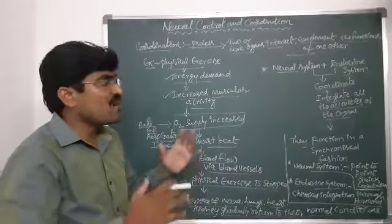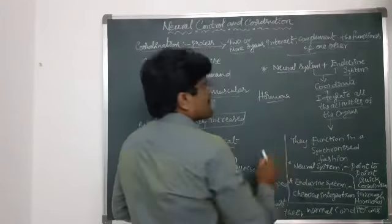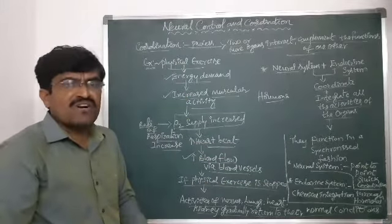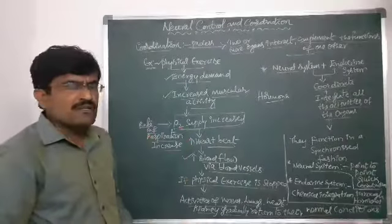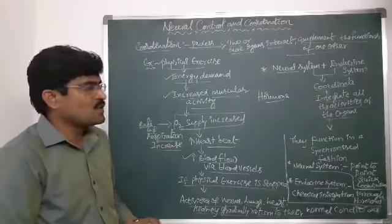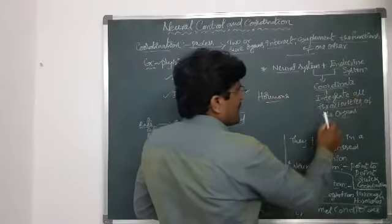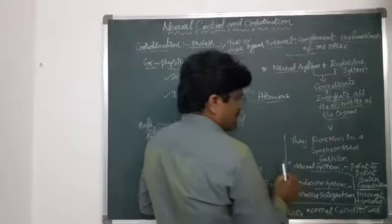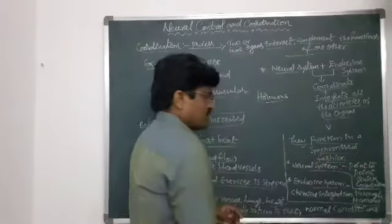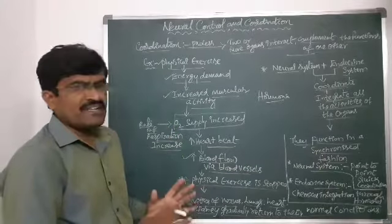A hormone is a chemical substance which is produced in one part of the body and transferred to a distant target area where its function is fulfilled. Many glands secrete their respective hormones, which play a major role in fulfilling body functions. These two systems — neural and endocrine — function in a coordinated and synchronized fashion to integrate all organ activities.